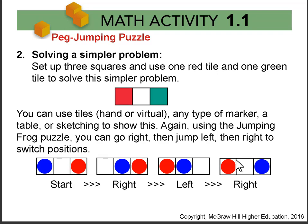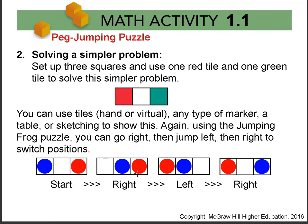For question two, solving a simpler problem is our problem-solving strategy. We're just going to start with one peg on each side — one tile, one marker — and you can use anything you like, including the frog jumping puzzle. For example, we could start, then move to the right, then go left, then go right again, and we've switched.